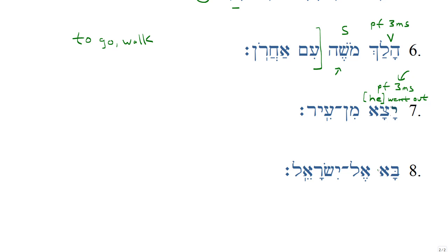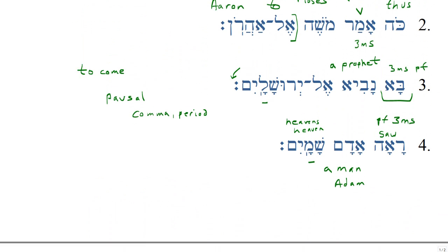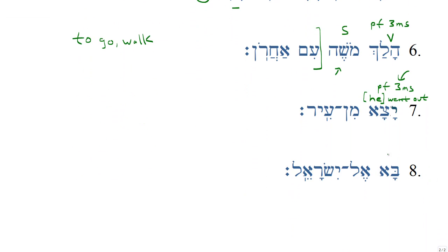And finally, number eight: Ba el Yisrael. We saw Ba earlier in number three — it's the same verb, 'he came' or 'he entered.' Like number seven, there is no explicit subject; we have a preposition immediately following the verb. So we need 'he' again. This is a perfect third masculine singular, so we need that third masculine singular pronoun 'he' to make our sentence. He came el Yisrael — to Israel. He came to Israel. That's number eight.